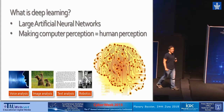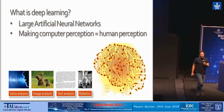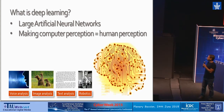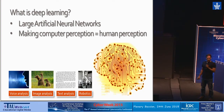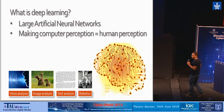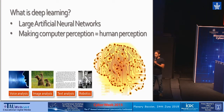I will discuss using deep learning in order to automatically annotate images. Deep learning is the study of neural networks with many layers, much larger than what we were able to train before. There is a lot of excitement about deep learning because it holds the promise of making computer perception as good as human perception.